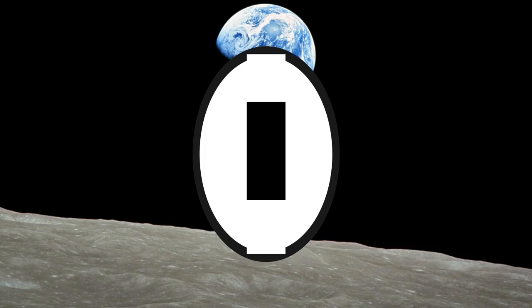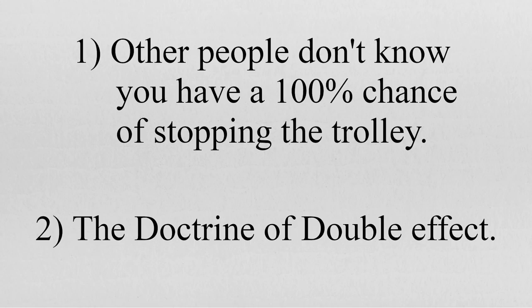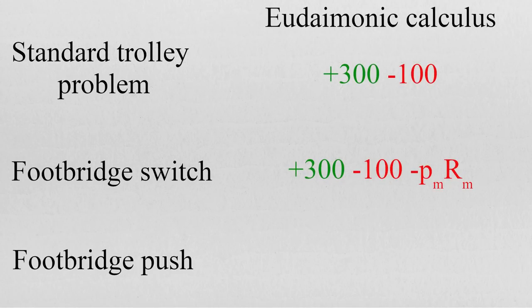Anyway, enough with the doctrine of double effect. Thanks to these two reasons just given, it should be quite clear by now that the eudaimonic calculus in the switch case is different from the one in the standard trolley problem, since in the switch case one would be eroding the rule to not murder. One of the first established societal rules, and one of great importance. While pulling the lever in the standard case would hardly be perceived as an act of murder.